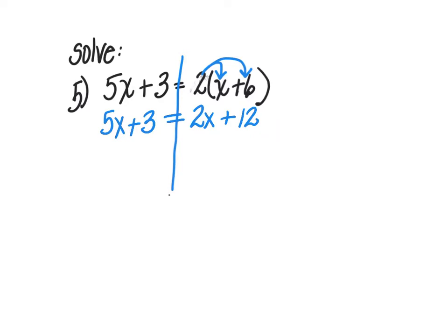Now that both sides are simplified, it's time to start moving my terms. I want to get my variable terms on one side of the equation and my constant terms on the other. I'm going to move my 2x to the other side — it's smaller, but it really doesn't matter what side your variable term is on. I have a positive 2x, so to move it to the opposite side, I'm going to do a minus 2x. That zeroes out the x's on the right side, so 5x minus 2x leaves me with 3x plus 3 is equal to 12.